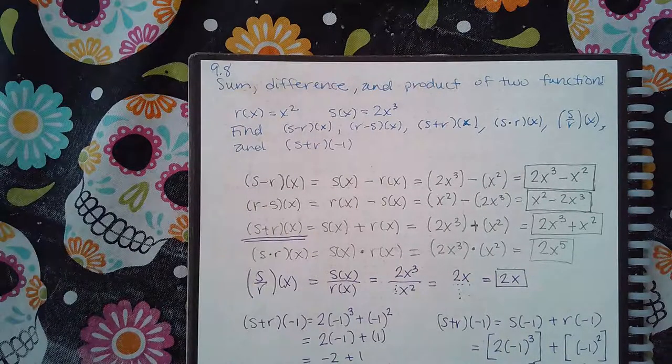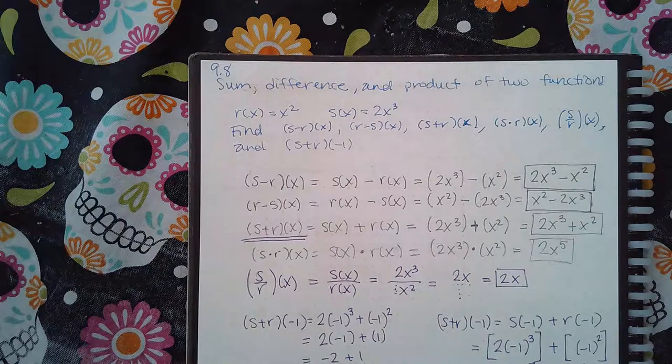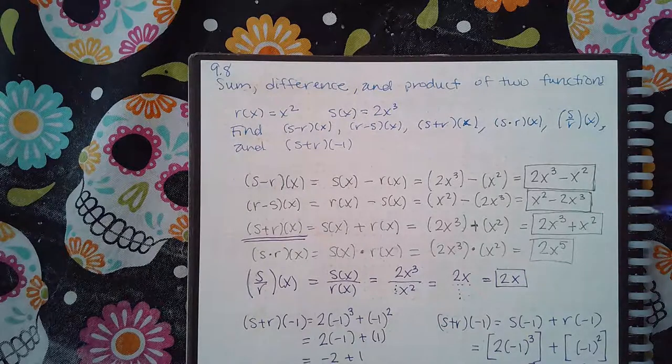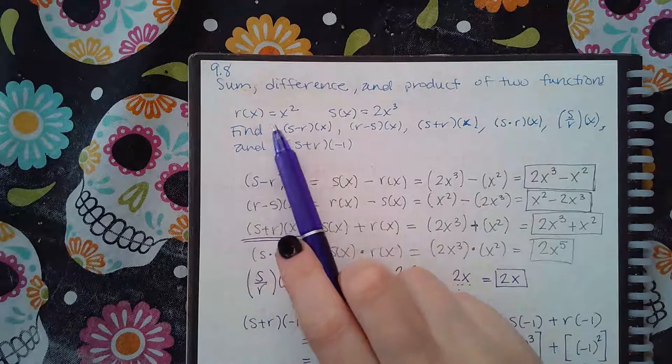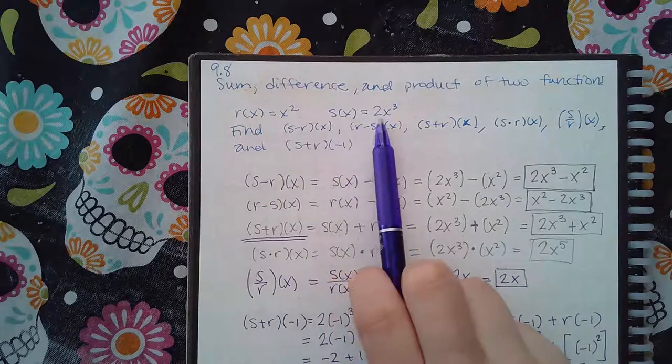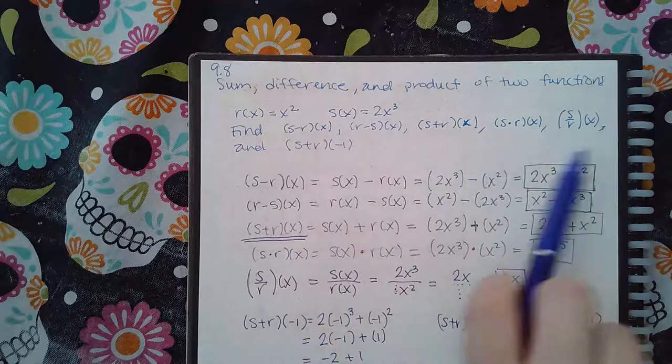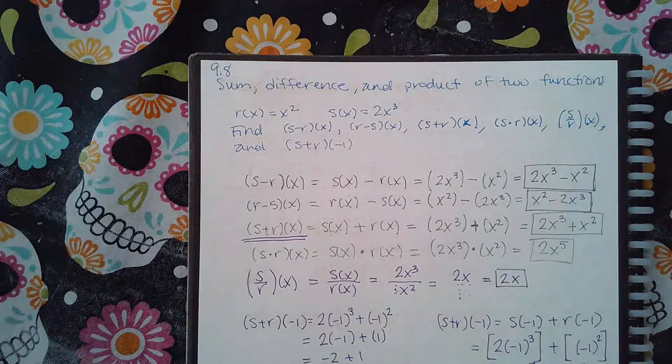In this video, it is problem 9.8: sum, difference, and product of two functions. r(x) equals x squared, s(x) equals 2x cubed. And then I want you to find a combination of the functions whether it be a sum, addition, a difference, either of the two subtraction orders, or a product.